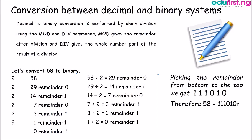29 divided by 2 we have 14. The remainder is 1. 14 divided by 2 we get 7. The remainder is 0. 7 divided by 2 we get 3. The remainder is 1. We continue like that.